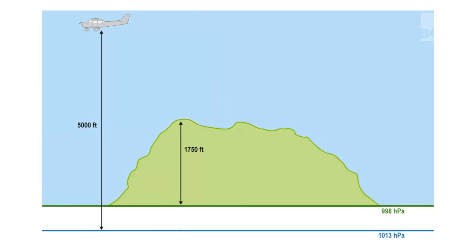Next, draw a line above that 1,013 hectopascal pressure level and annotate it 998 hectopascals. This represents mean sea level. On top of this diagram, draw some terrain and annotate the distance between mean sea level and the highest point on the terrain as 1,750 feet.